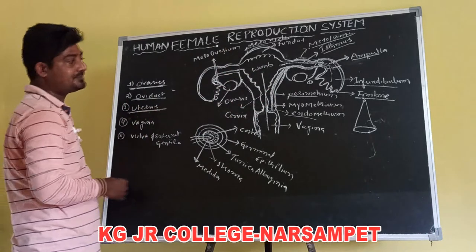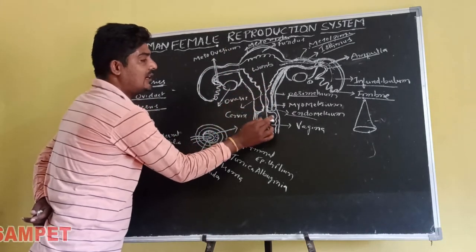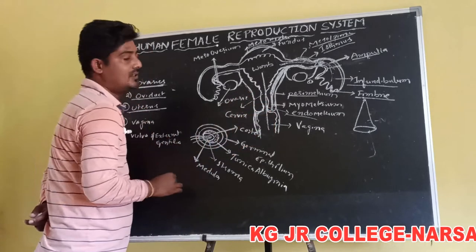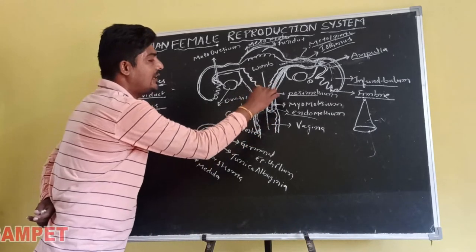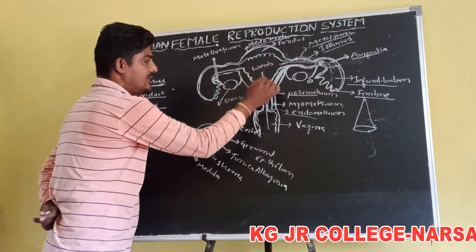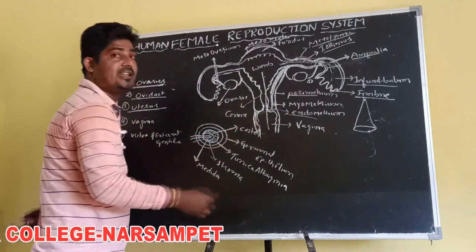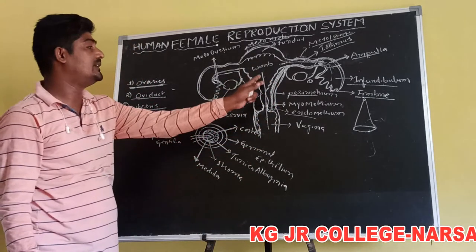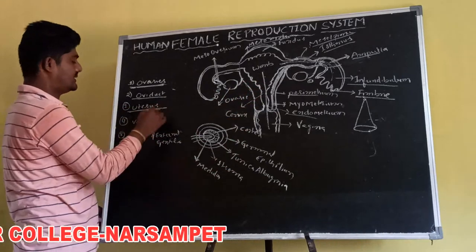The uterus is joined on the posterior side to the vagina through the uterine cervix. The cervix and vagina together form the birth canal.